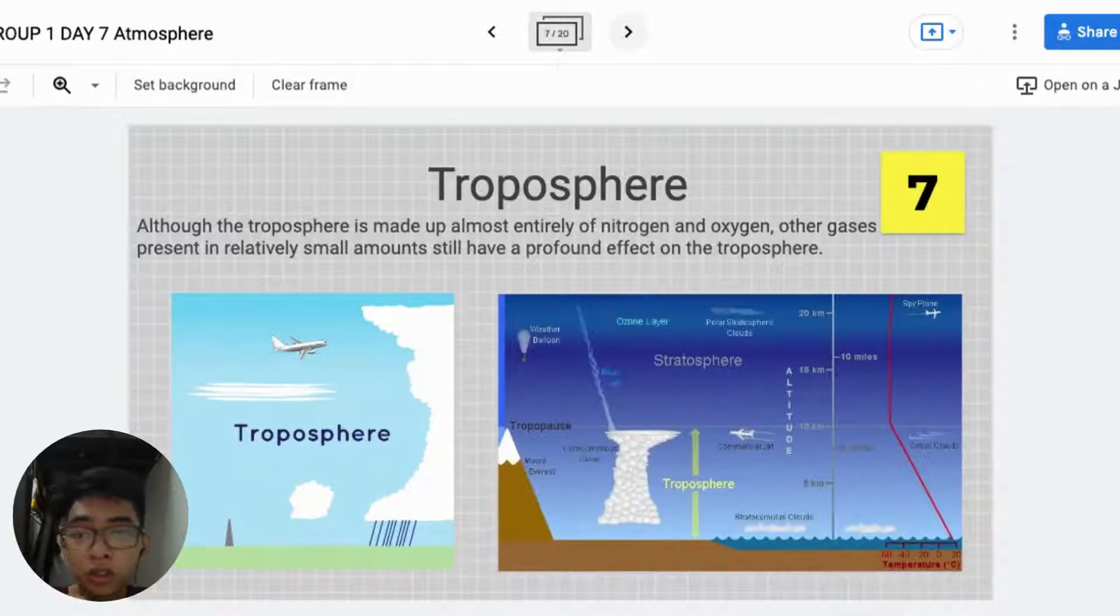Troposphere. Although the troposphere is made up almost entirely of nitrogen and oxygen, other gases present in relatively small amounts still have a profound effect on the troposphere.